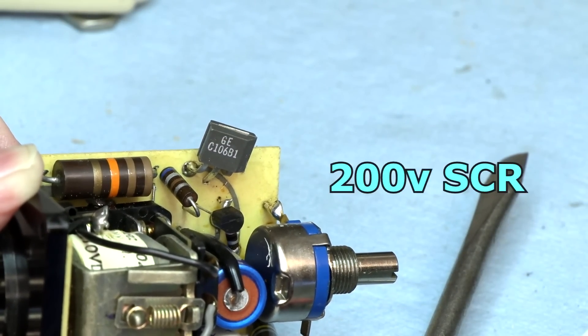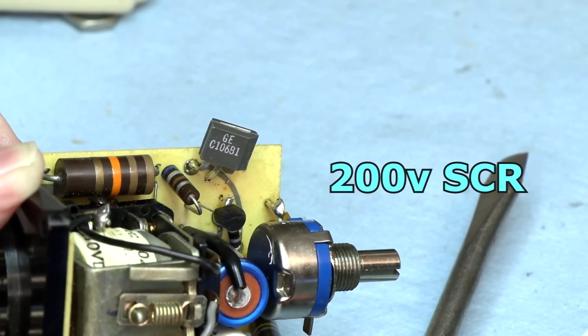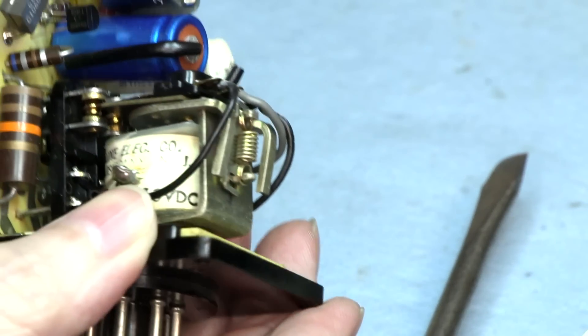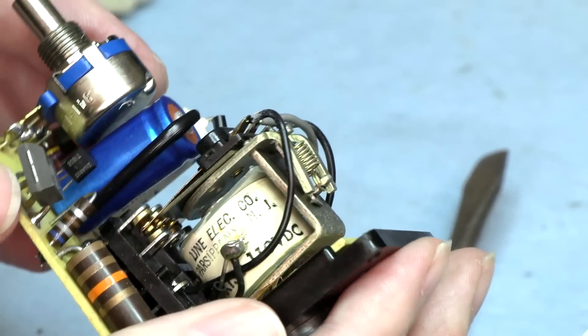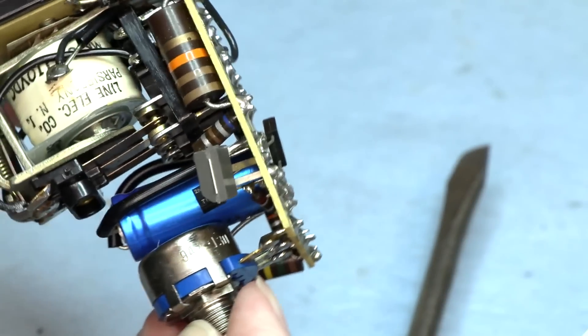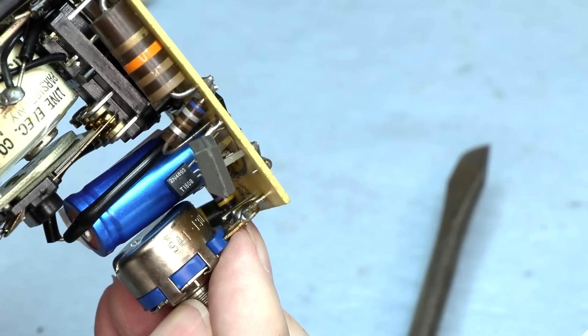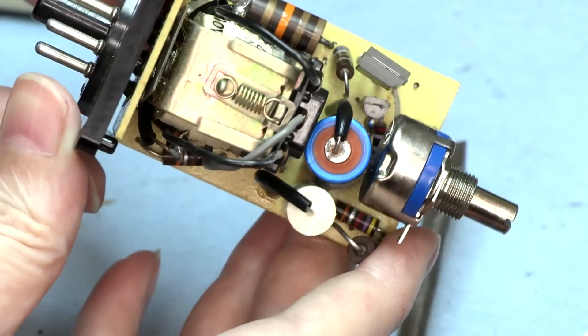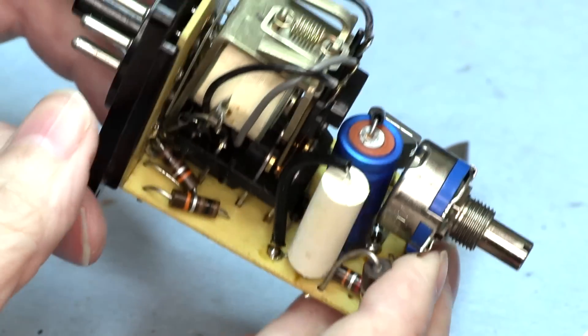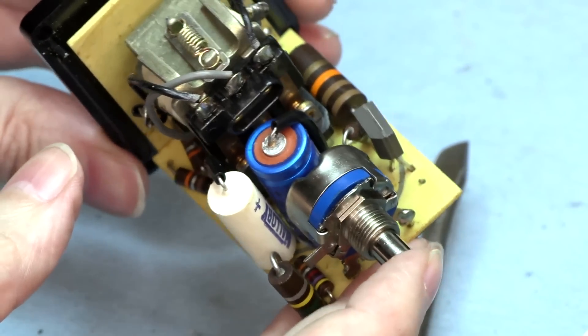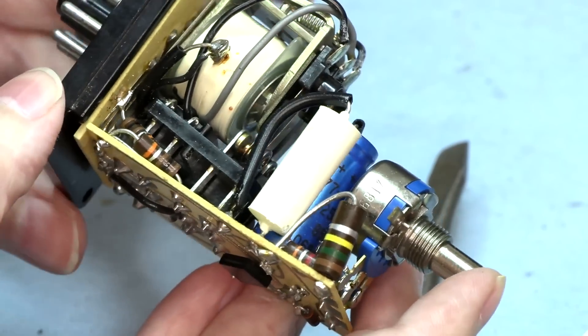Transistor there. It's a GE, number C106. Got a TO-95 transistor down there. That is a 2N4893. Like three caps, bunch of resistors, and a timing circuit in there, resettable timing circuit.